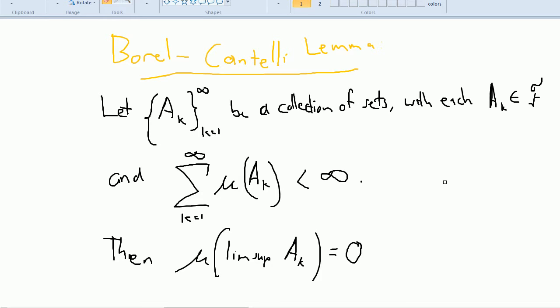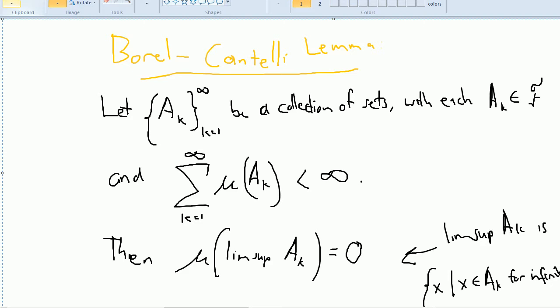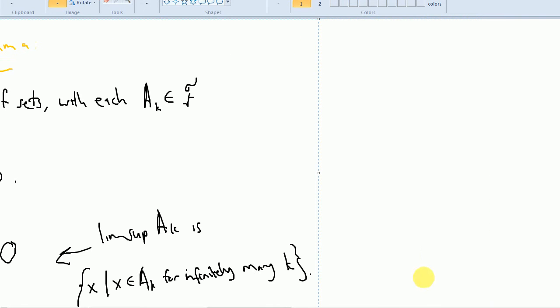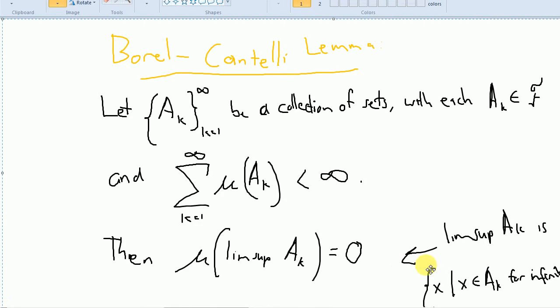Now let me remind you of what the lim sup is. The lim sup of a set, or a collection of sets, is a set of all x such that x is in infinitely many different A sub k, so x is in a set infinitely many times. That's the lim sup, and we're going to show that that has measure zero.